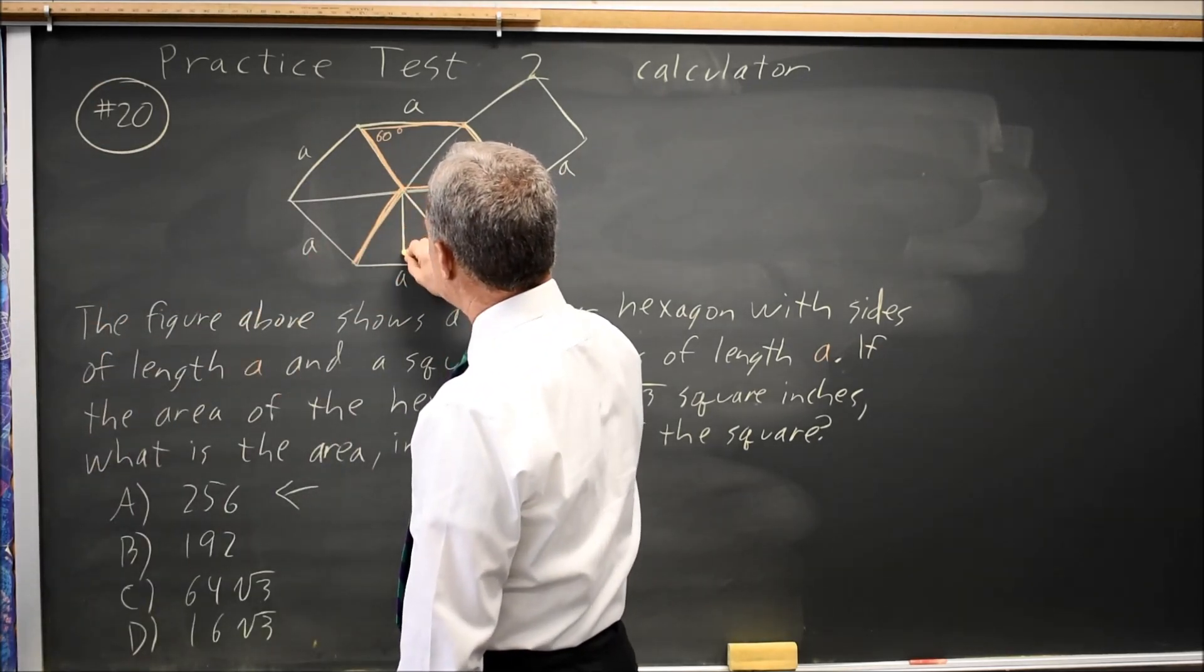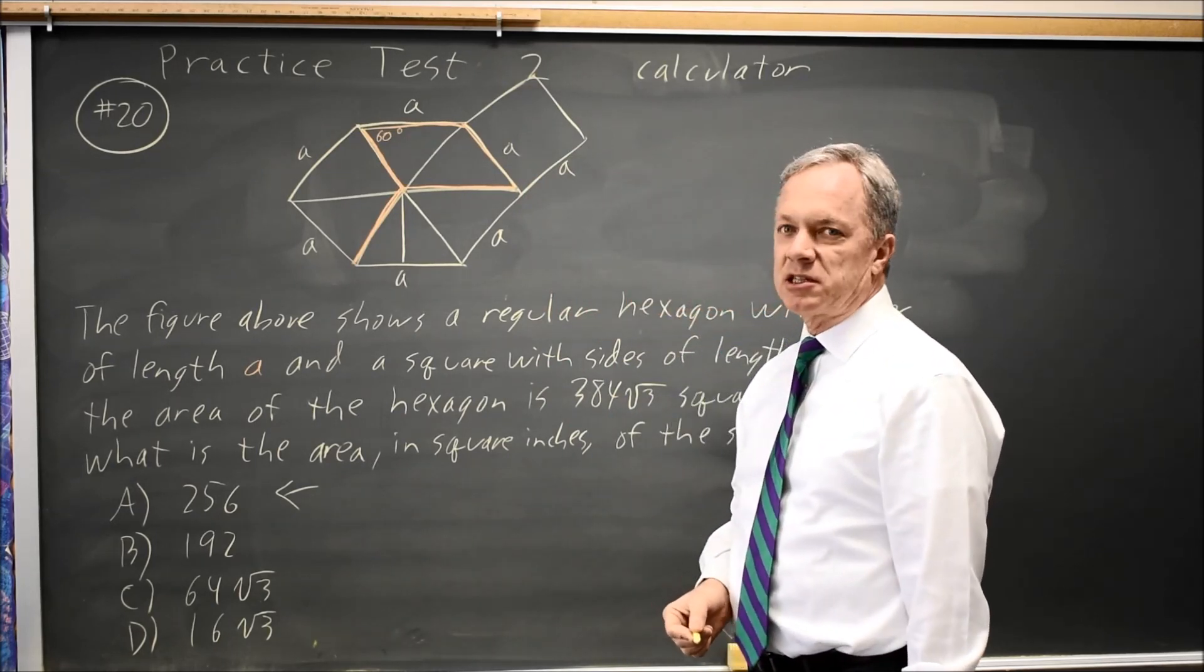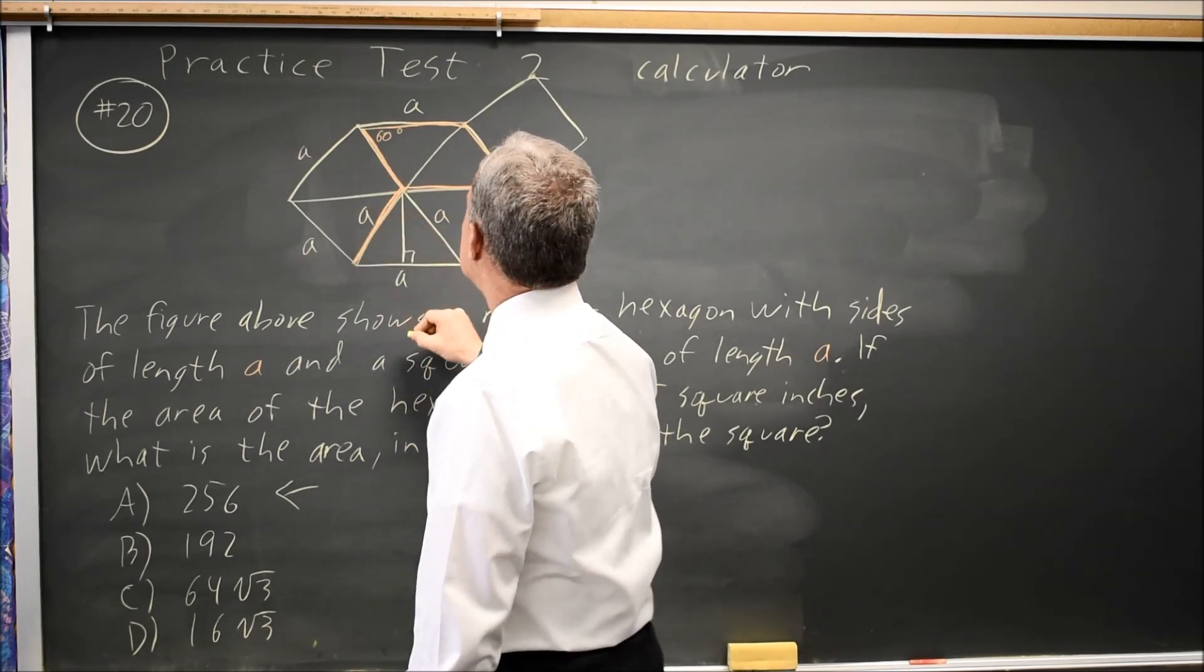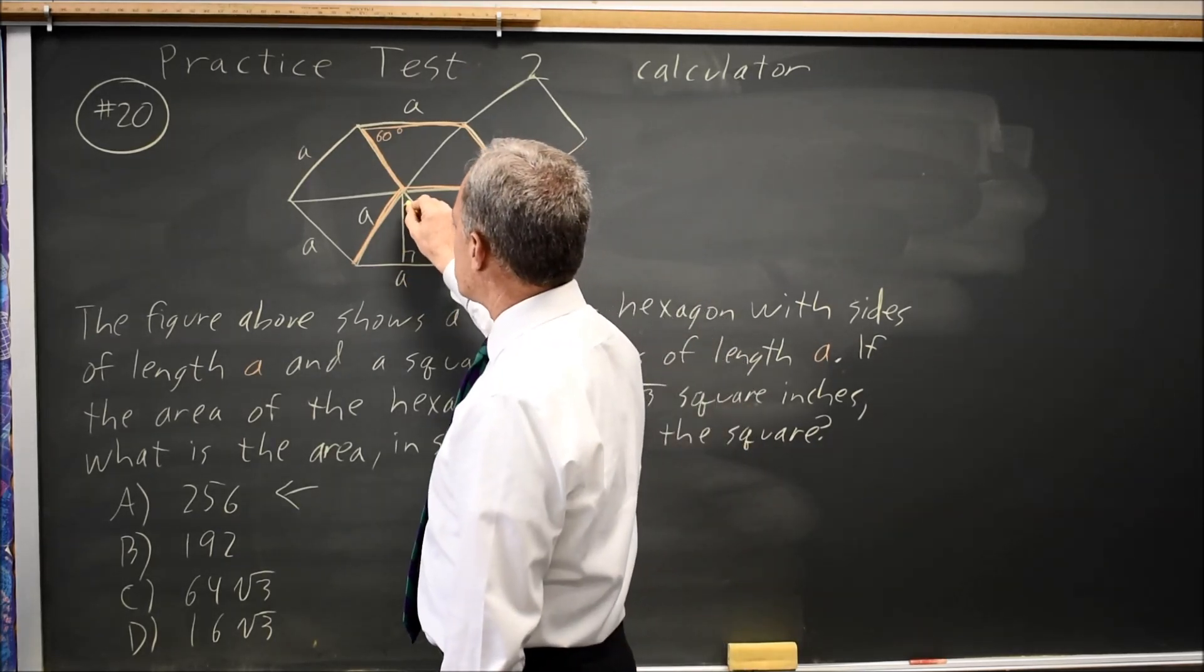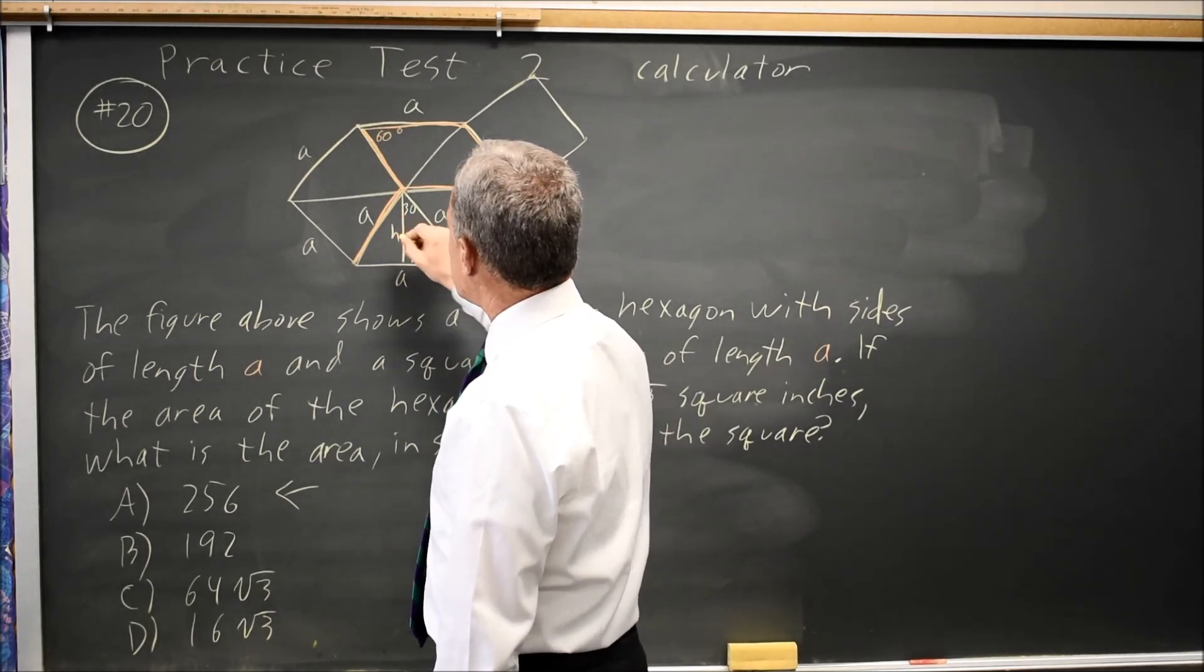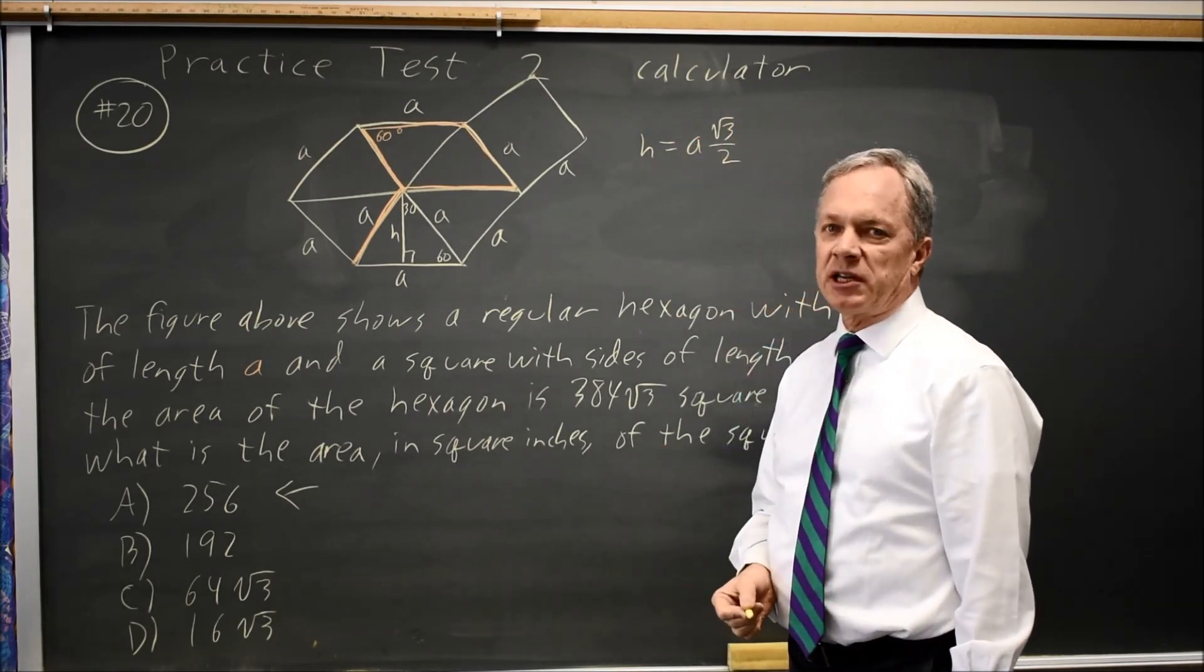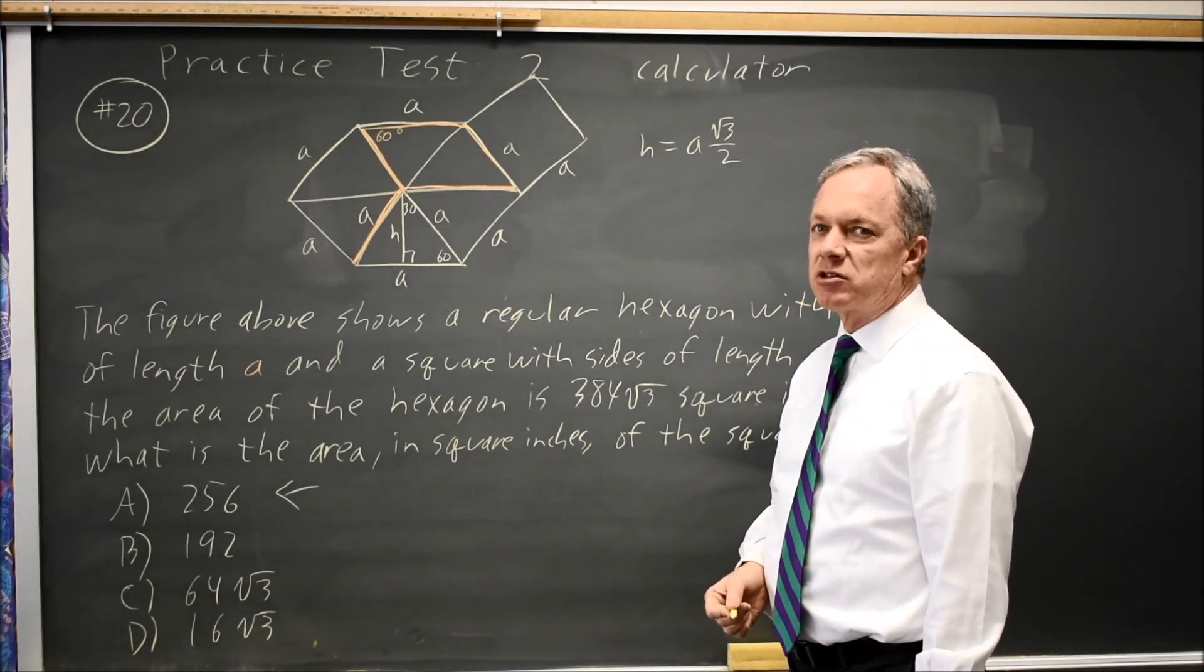Looking at one of the six equilateral triangles the hexagon divides into, where this is a right angle, special right triangles tell us that dividing a 60-degree angle in half gives 30 degrees. The height H is A√3/2, from the formula sheet or unit circle.